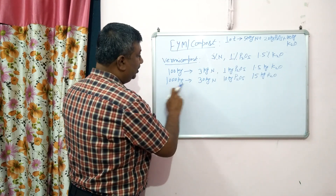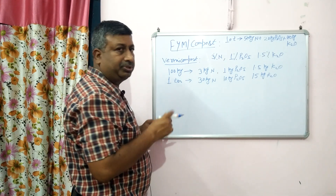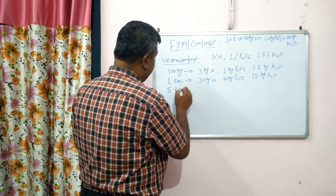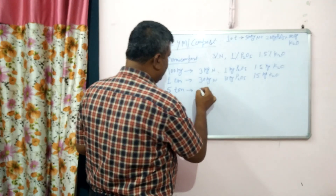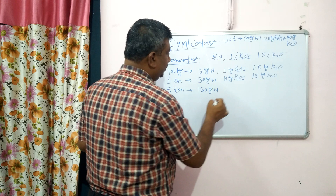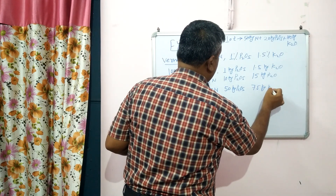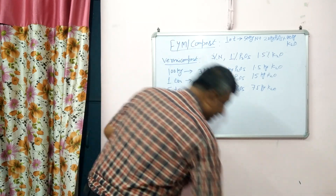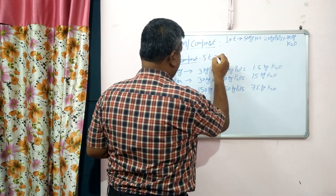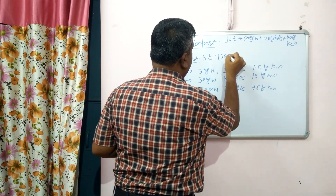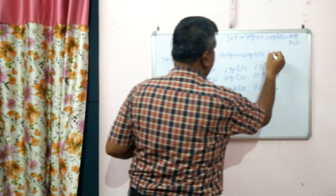This is a simple calculation. Now, 1000 kg equals 1 tonne. The application rate of vermicompost is about 5 tonnes — that is the general recommended rate, though the dose can be increased or decreased. Multiplied by 5: we get 150 kg nitrogen, 50 kg phosphorus, and 75 kg potassium. So 5 tonnes of vermicompost provides 150 kg nitrogen, 50 kg P₂O₅, and 75 kg potassium.